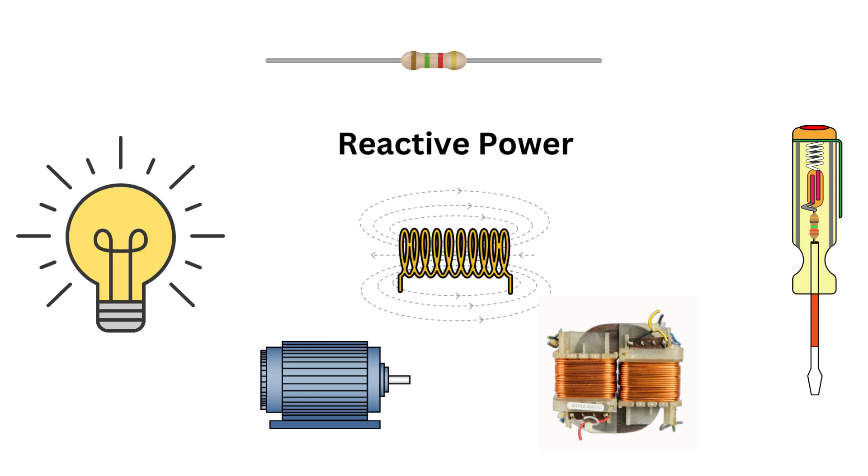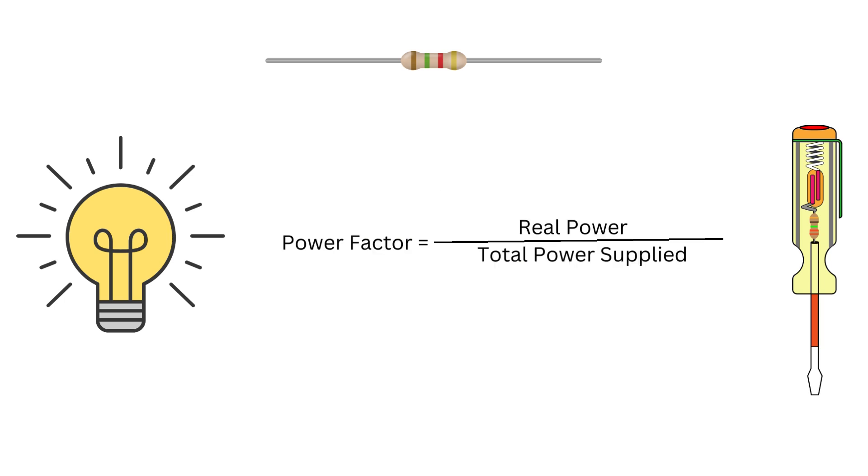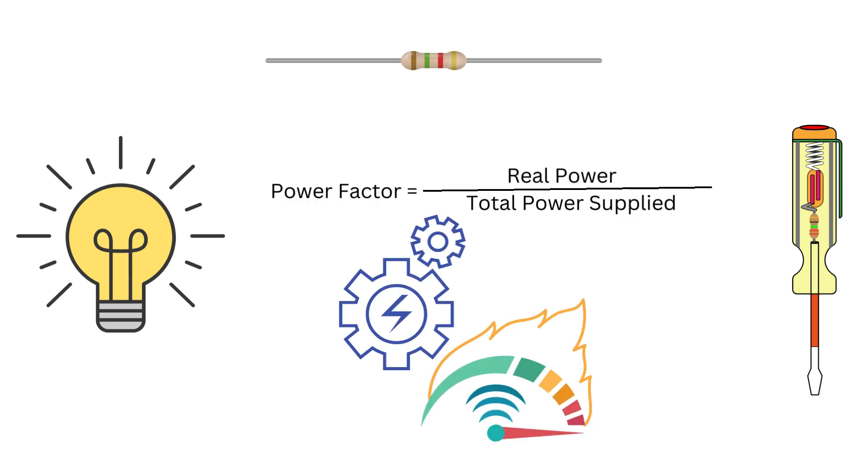...but doesn't directly perform any work. So what's power factor? Simply put, it's the ratio of real power to the total power supplied. It tells us how efficiently the electrical power is being converted into useful work.